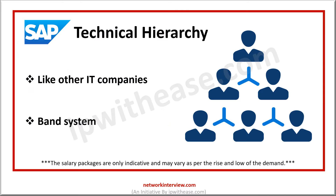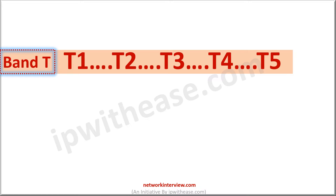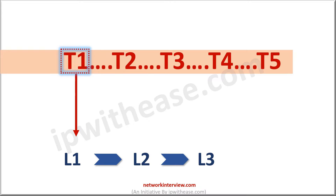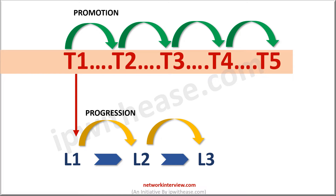Moving on to the crux, that is the technical hierarchy. Like other famous tech companies, SAP also uses the band system to classify their workforce. We will focus on Band T, as Band T stands for the technical department, which extends from T1 to T5. Each level has three subdivisions called L1, L2, L3. Movement from L1 to L2 or L2 to L3 is a progression with no salary hike, and movement from T1 to T2 and so on is considered a promotion with salary hike. The average progression happens every one or two years based on the skills of the candidate.